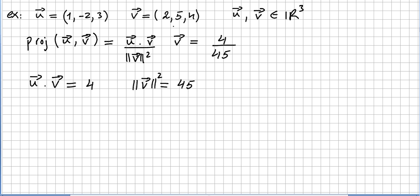So we have (u·v)/(||v||²) times v equals (4/45) times (2,5,4). That gives us 4 times 2 is 8 over 45, 4 times 5 is 20 over 45 which is 4/9, and 4 times 4 is 16 over 45.